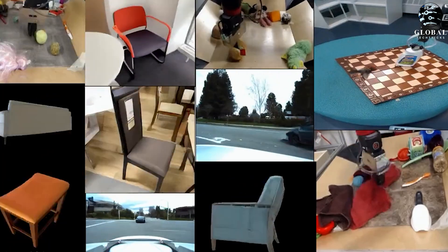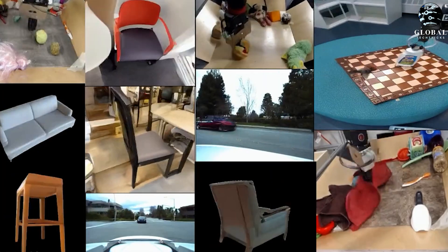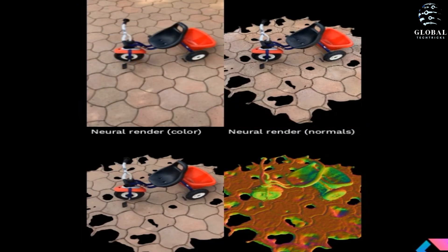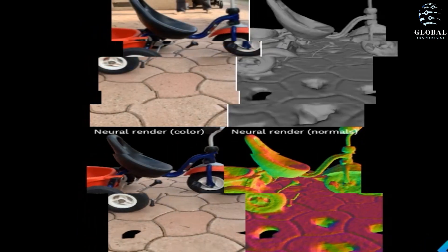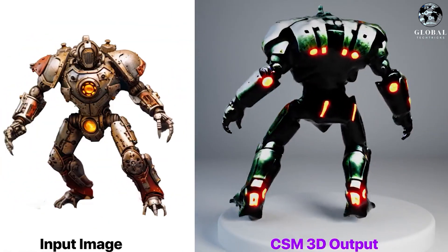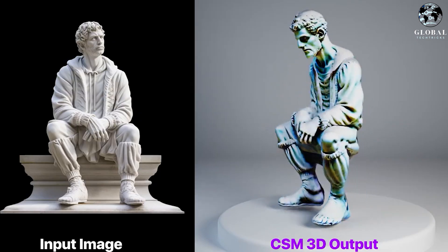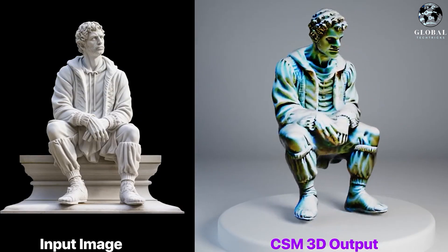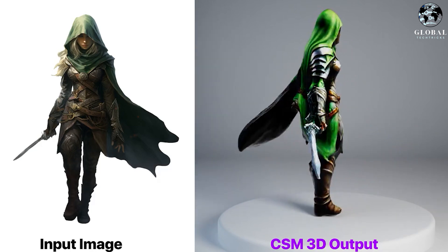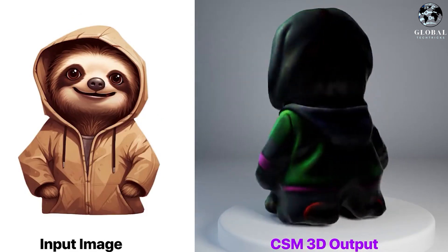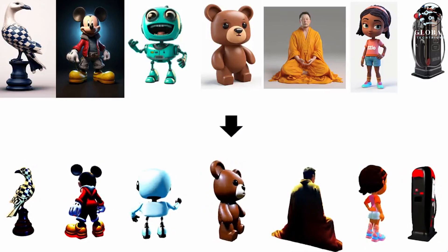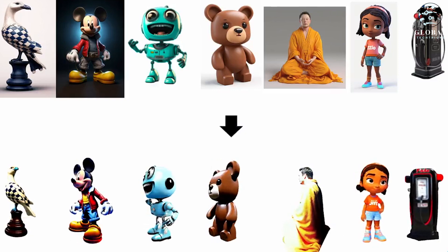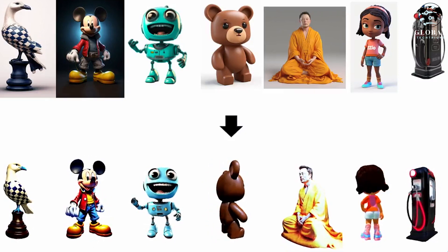On their YouTube channel, Common Sense Machines showcases various examples of the impressive assets generated using their tool. They provide side-by-side comparisons of the 2D input and the corresponding 3D output produced by CSM. For instance, they demonstrate the transformation of a 2D image of Iron Man into a fully realized 3D character. The videos also highlight the disparity between CSM's output and existing solutions like OpenAI's Shape, which still have limitations. These examples serve as a tantalizing preview of the potential capabilities of CSM, leaving viewers excited about the prospect of utilizing such a powerful tool.